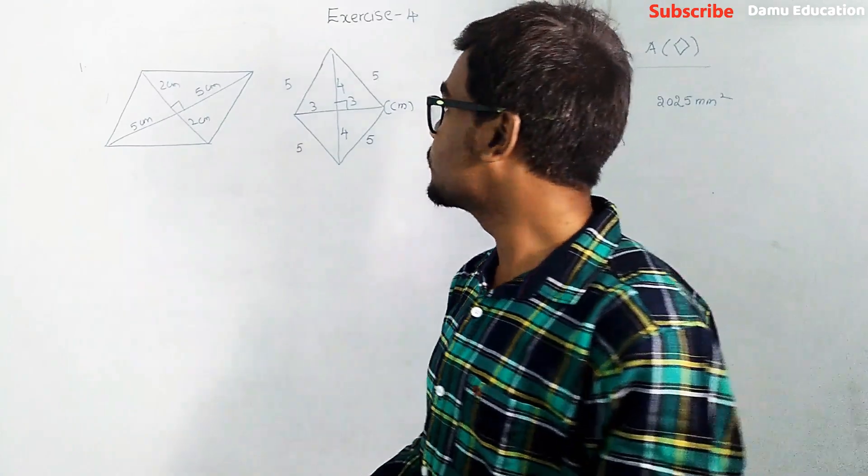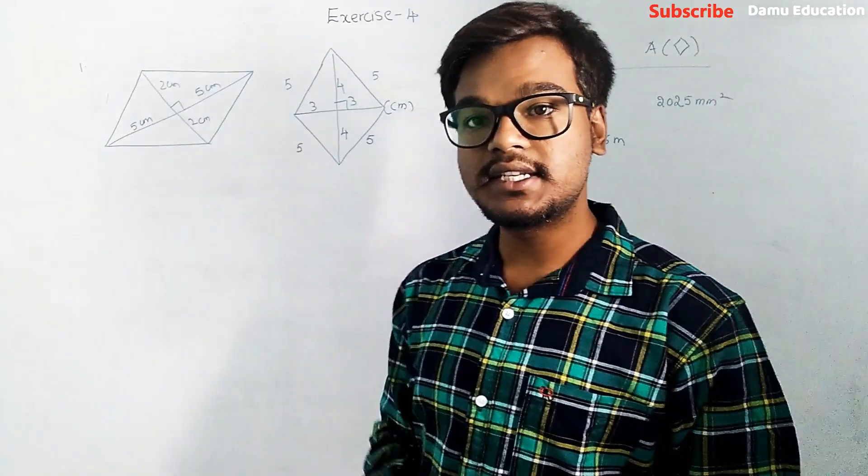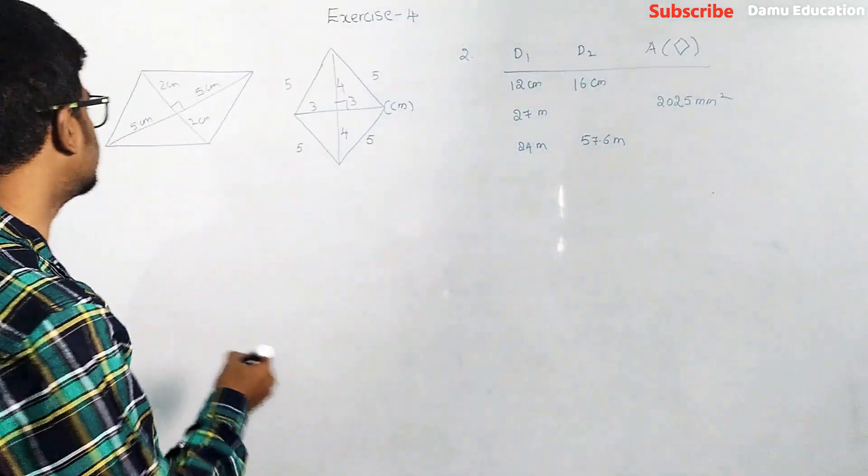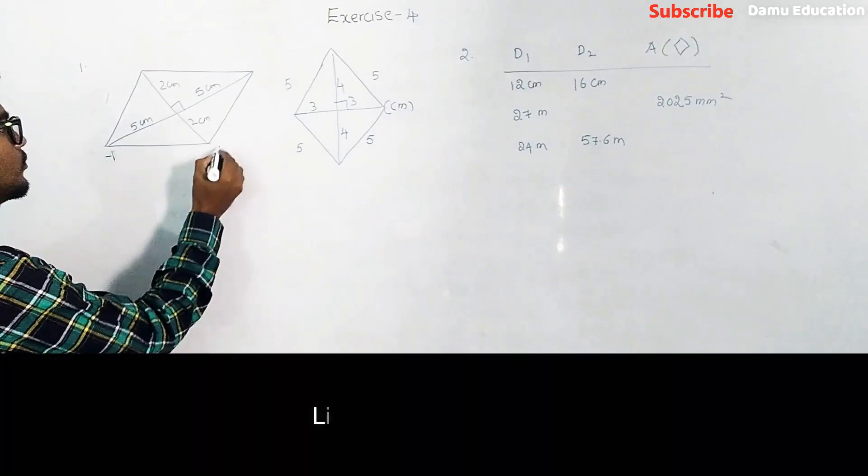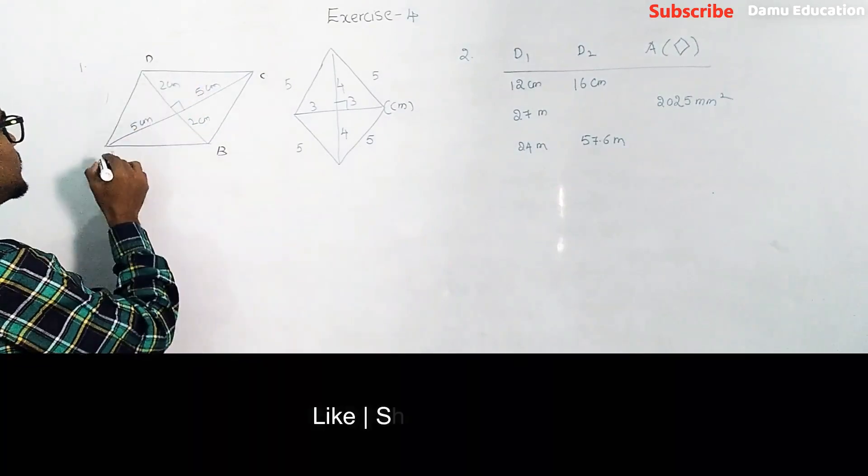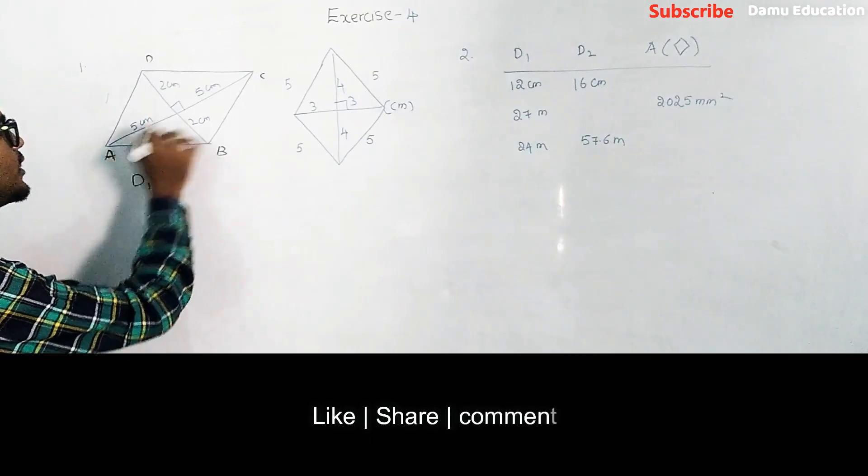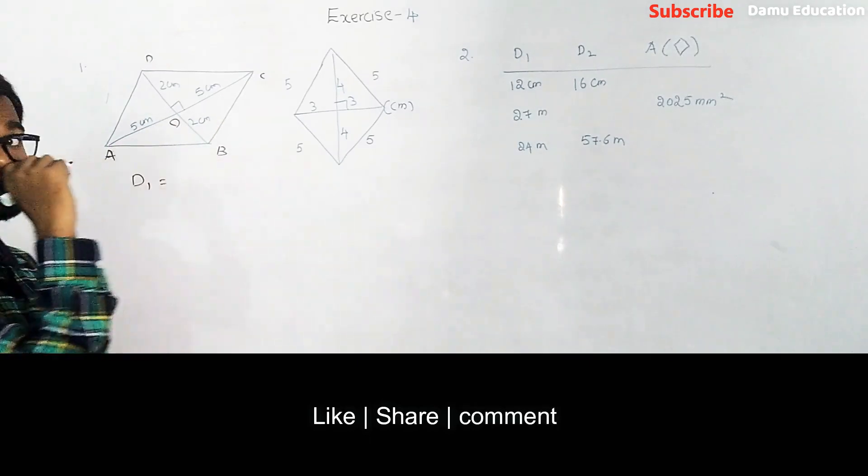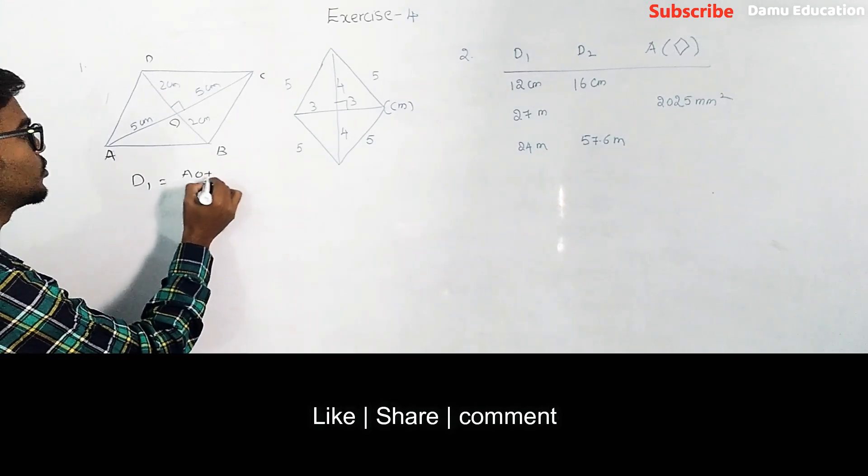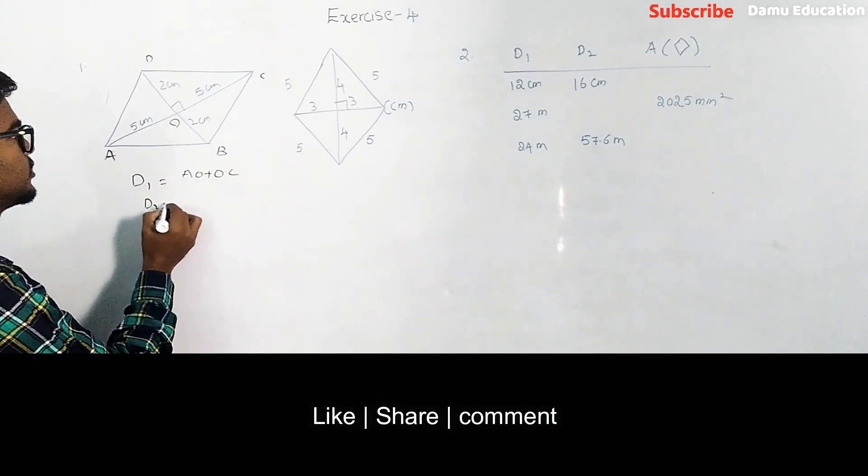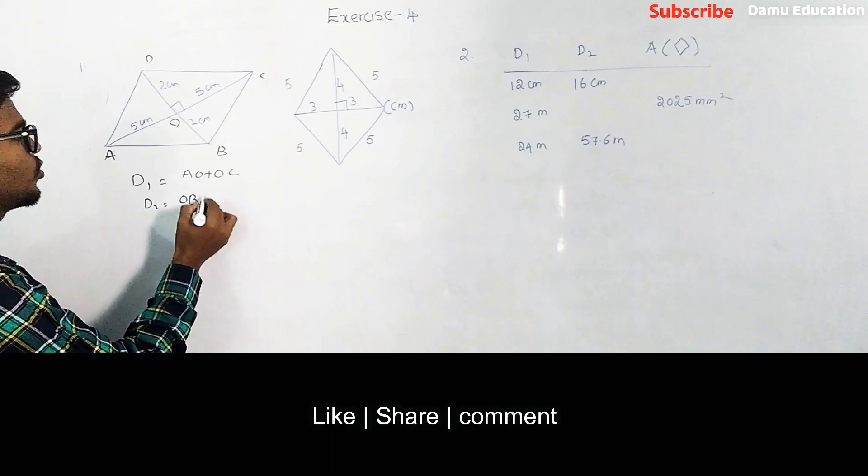So here, what are the diagonals? Let's take rhombus - this will be A, B, C, D. So here diagonal 1 and diagonal 2. Let's take intersection point will be O, so AO plus OC, then diagonal 2 will be OB plus OD.